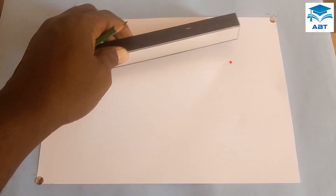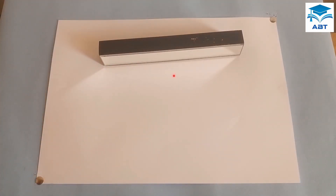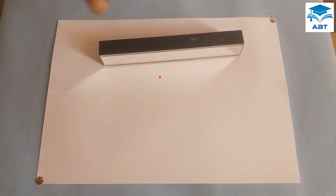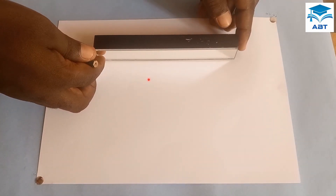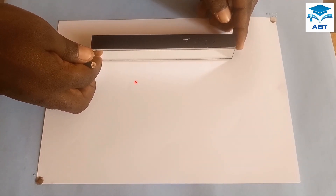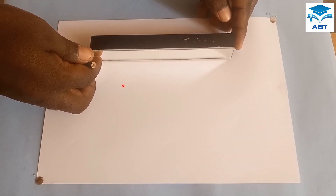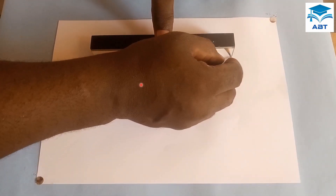We fix the drawing sheet on a drawing board using drawing pins to keep it firm. And we draw a horizontal line to represent the mirror line.